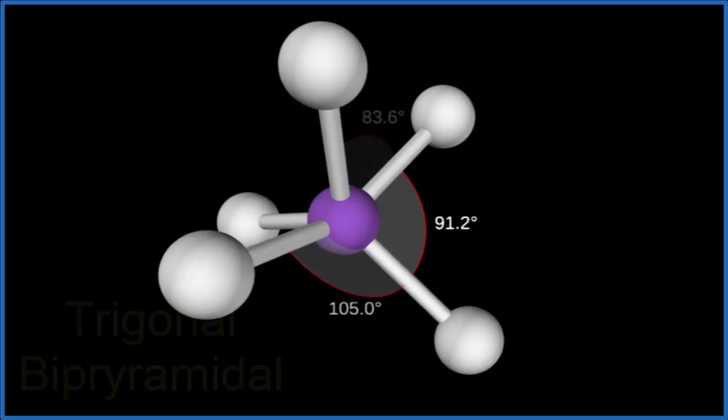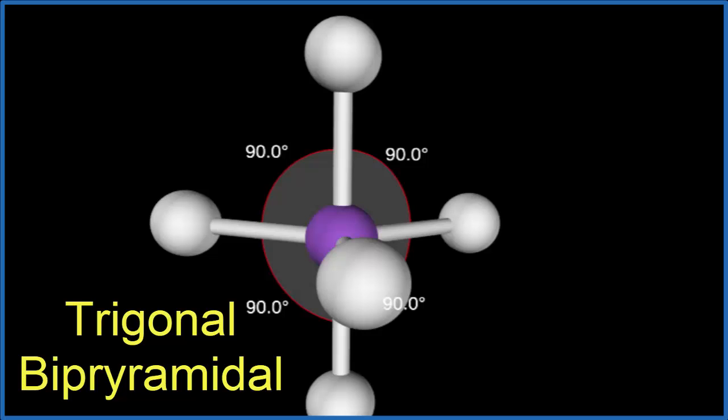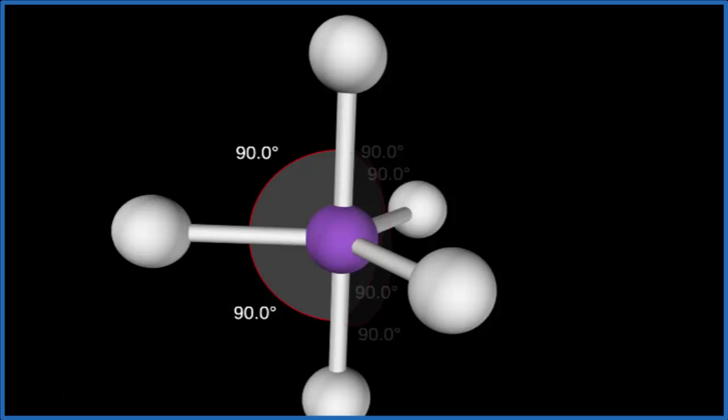Now we have what's called a trigonal bipyramidal molecular geometry. You can see these bond angles, they're right angles at 90 degrees. Along the equator here, these would be 120. Because we don't have lone pairs, the electron geometry will be trigonal bipyramidal as well.